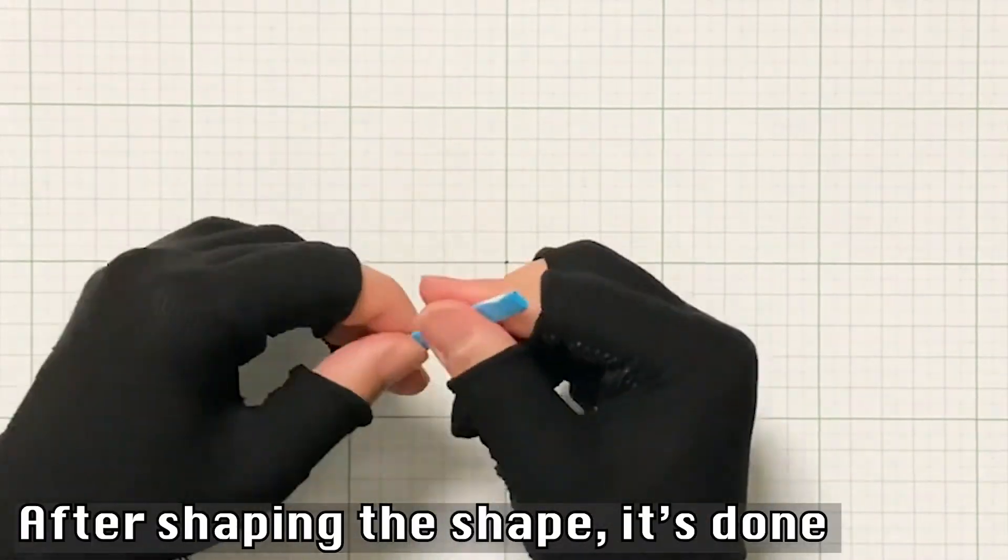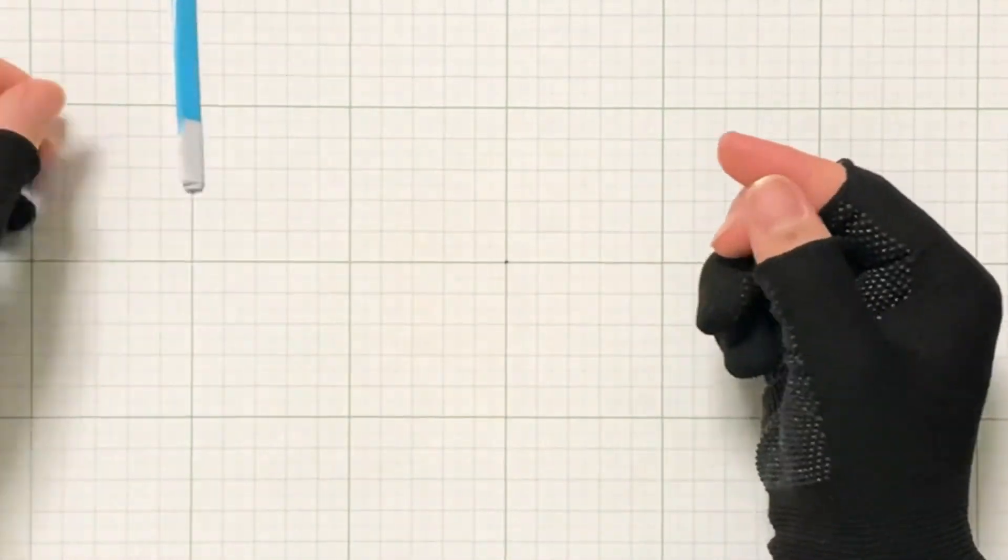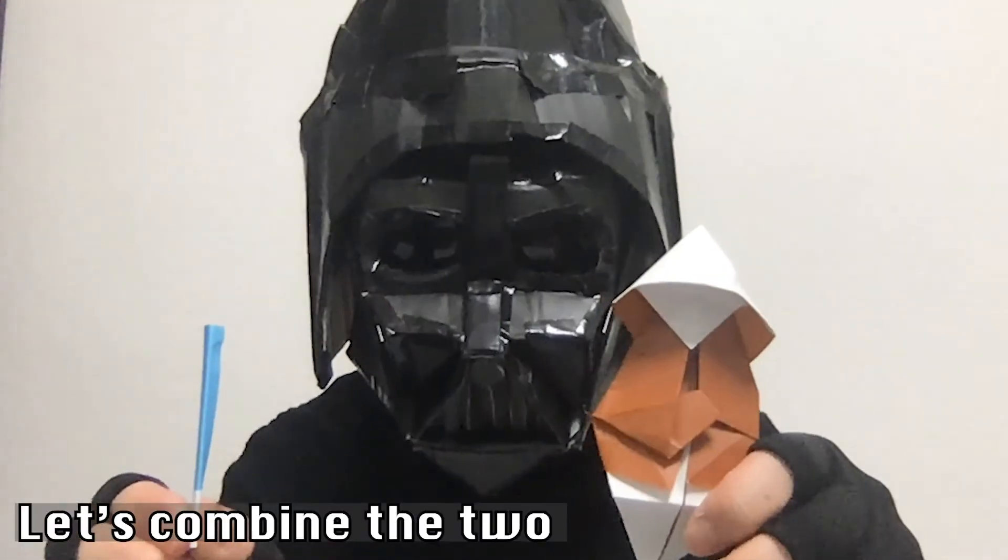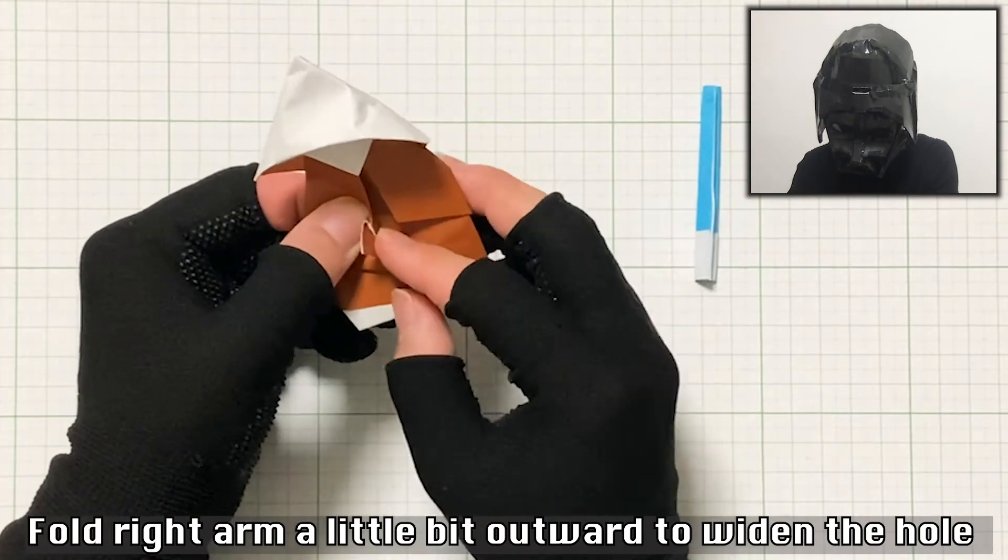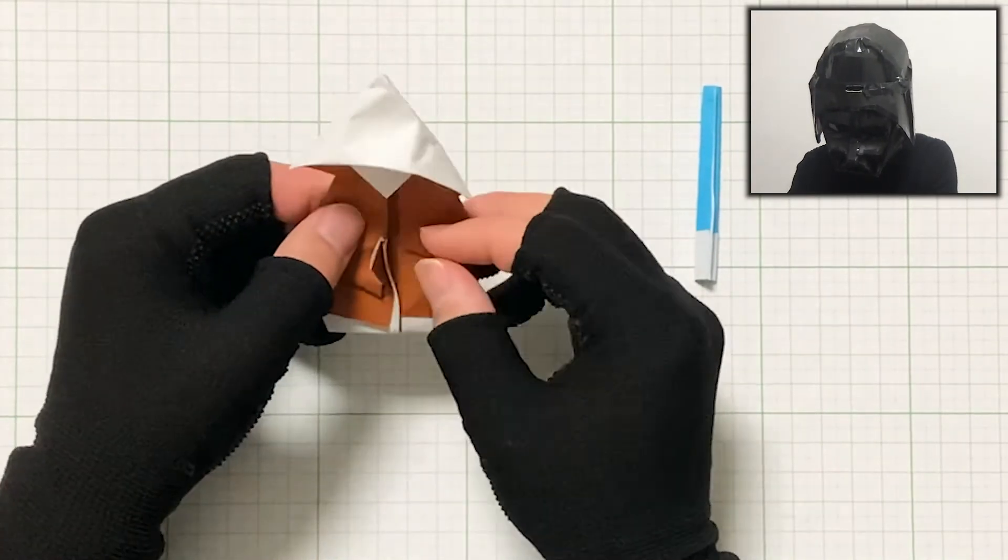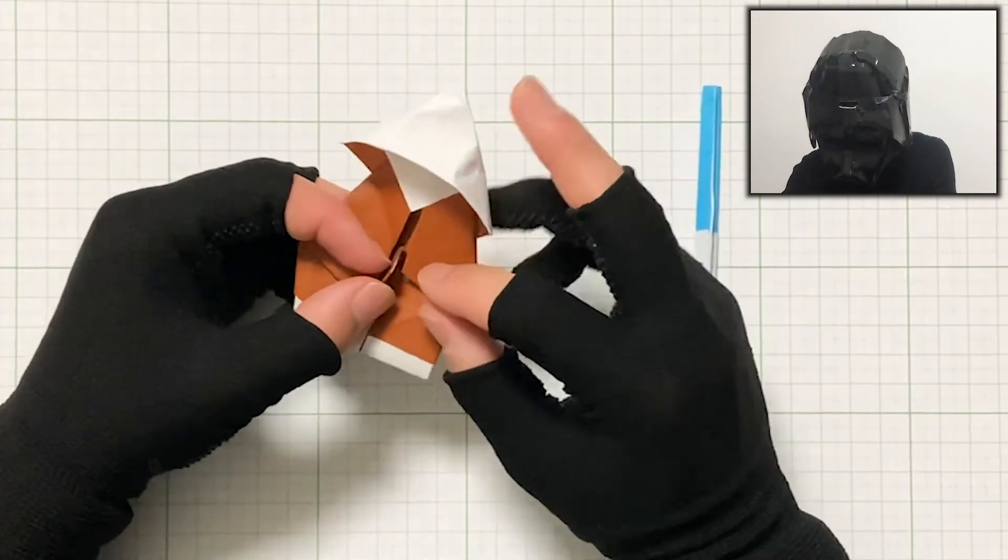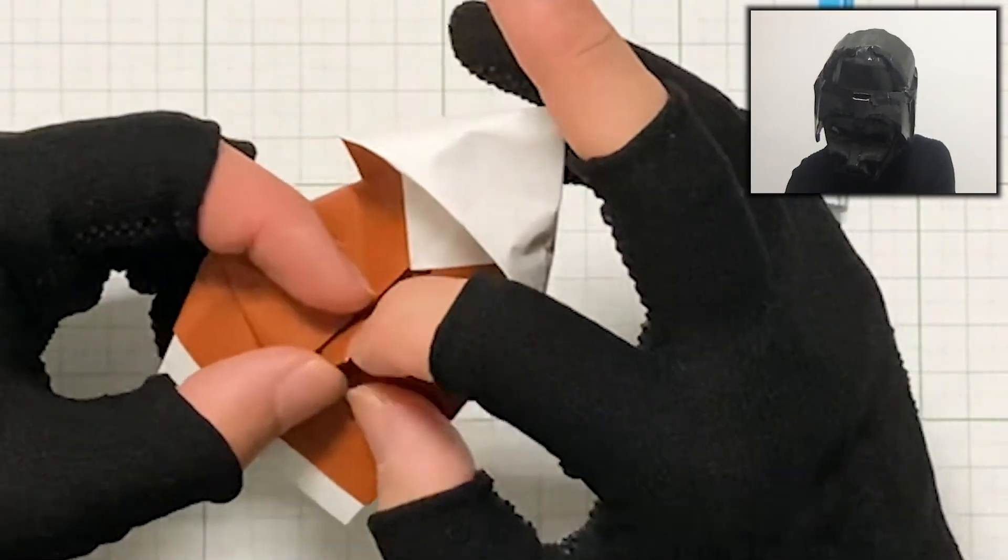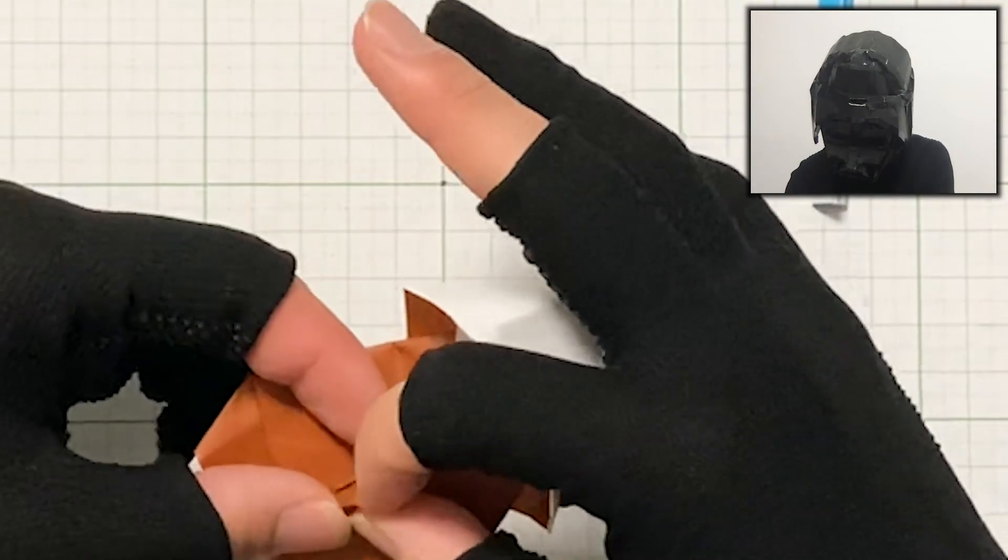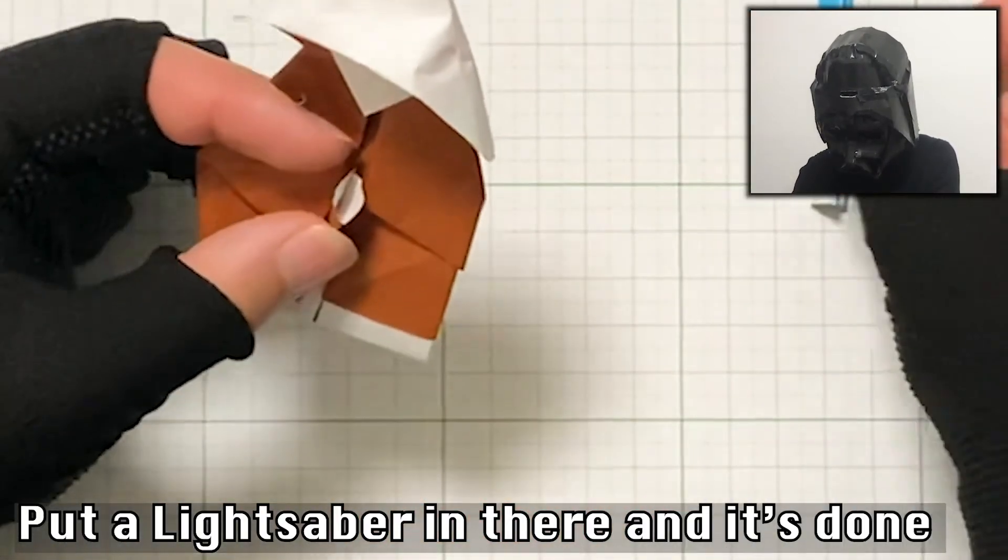After shaping, it's done. Let's combine the two. Fold the arm a little bit outward to widen the hole. Put the lightsaber in there and it's done.